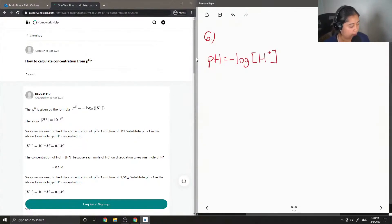So, if we are given the pH of a solution, then we're able to calculate the concentration of H+, and then we can calculate the concentration of the solution that we started with. So let's have an example.